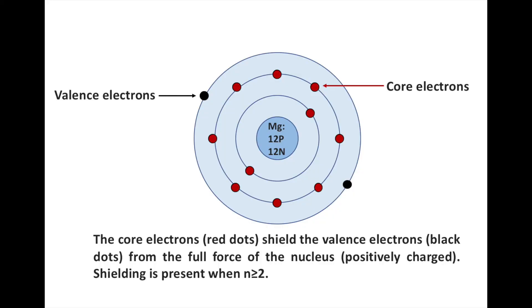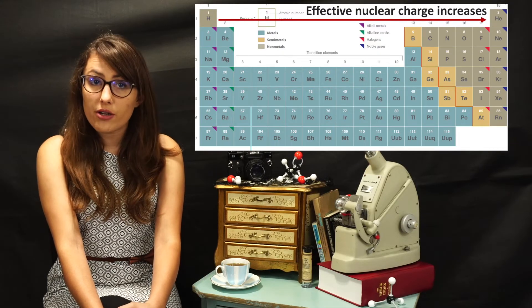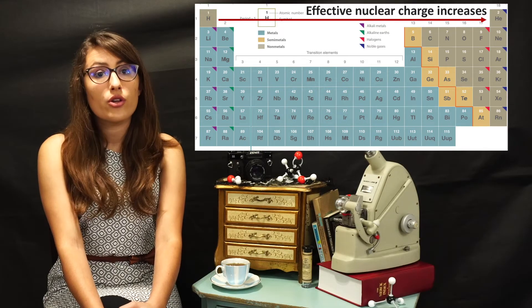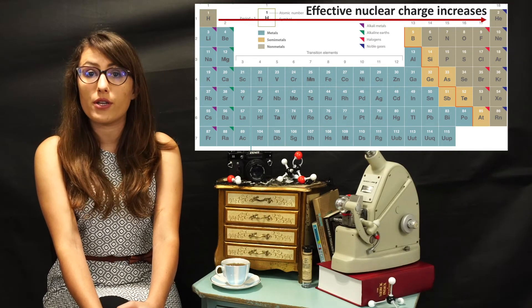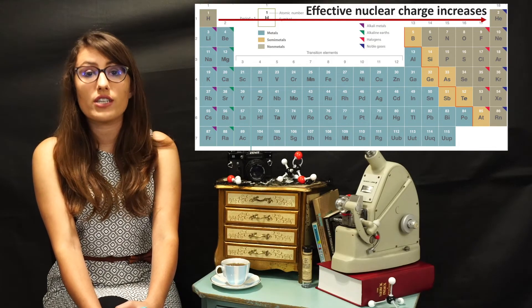However, the valence electrons do not always feel the full effect of the nuclear charge. This is because core electrons shield the outer electrons from the pull of the nucleus. Shielding is present when the principal quantum number n is 2 or higher, because below this, atoms do not have core electrons. Core electrons feel more positive attraction to the nucleus than valence electrons, because valence electrons are on the outermost orbitals and furthest from the nucleus. Due to this, these electrons experience a smaller attraction force. As you move across a period, the number of core electrons stays the same, so the shielding effect does not change across a period, and the effective nuclear charge is the dominating factor.